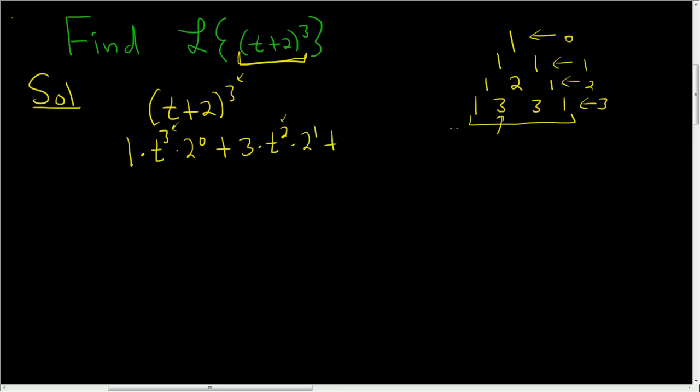Plus, again, 3 times t, you go down, so t, 2 becomes 1, and here 1 becomes 2, so 2 squared. You got to be careful here. Plus 1, that's this 1 here, times t to the 0 times 2 cubed. Let's go over that again, so let's be really careful.